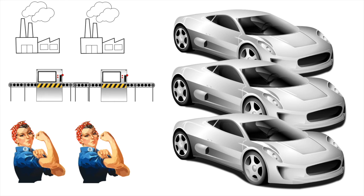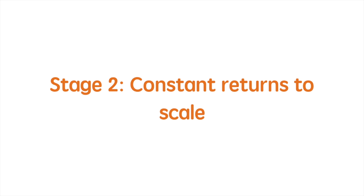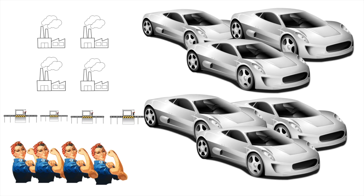In this case there are increasing returns to scale. We will consider the economies of scale that cause this to happen in a later video. Next we'll look at constant returns to scale. From our previous point we have doubled the production inputs, which means there has been an increase of 100%. Production output has also increased by 100%. Since there is an equivalent percentage increase in production inputs and output, constant returns to scale have been achieved.